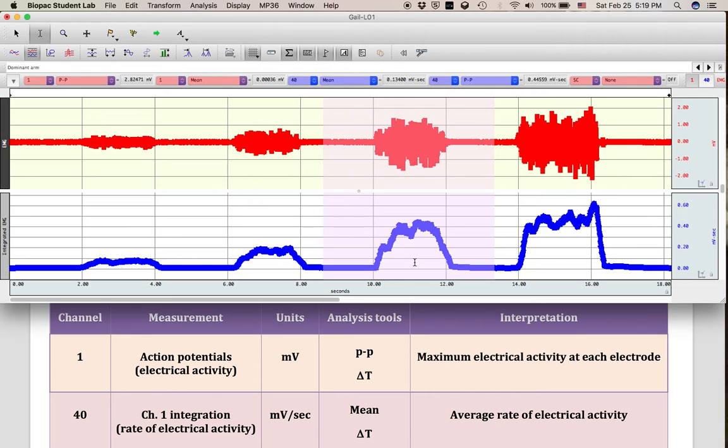Regarding channel 40, it's very important that you only highlight the given clench effort because this is taking an average in our mean analysis tool.